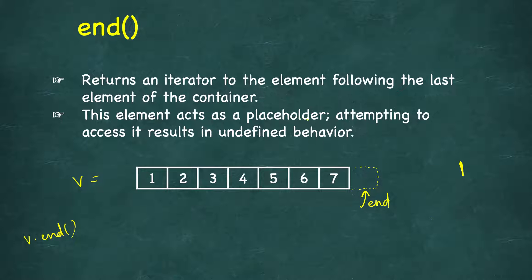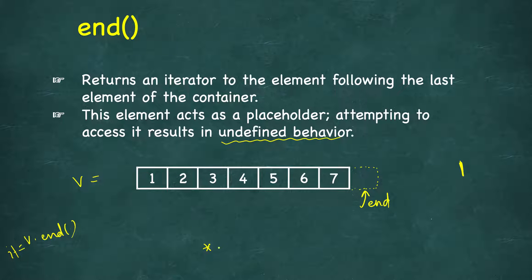This element acts as a placeholder, and attempting to access it results in undefined behavior. If we dereference end, dereferencing begin is straightforward — it always returns the first element — but dereferencing end can return different values depending on what is stored at that memory location; it is undefined.